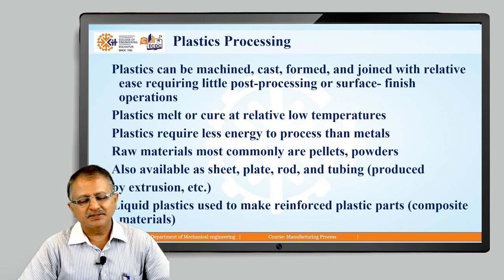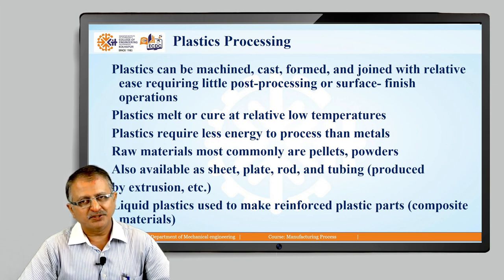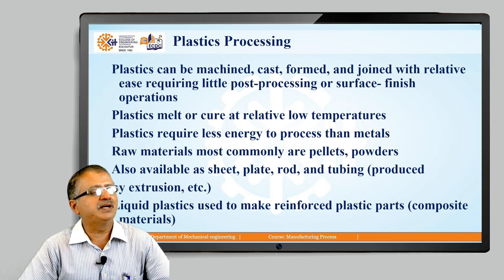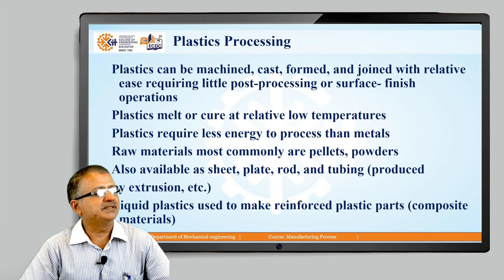As far as plastic processing is concerned, as we discussed in the first session, plastic over a 100-plus years has emerged as a very crucial material. It has emerged as a substitution material to many materials which are in commercial use. Plastics can be machined, cast, formed, and joined with relative ease, offering very good cost, quality, and time requirements — the ultimate objectives of any process. Plastic serves and fulfills these very well compared to other materials.